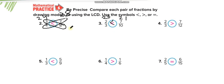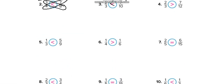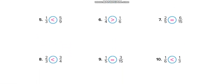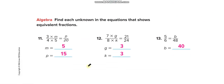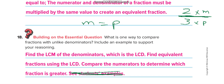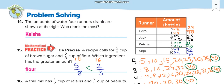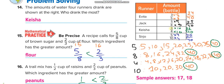You can use cross multiplication, also called the butterfly rule, or you can use the LCM method shown on the first examples. However, you can't use the butterfly rule when comparing more than two fractions. When comparing only two fractions, you can use it — for example, 5 times 3 equals 15, and 8 times 2 equals 16, and 16 is greater.